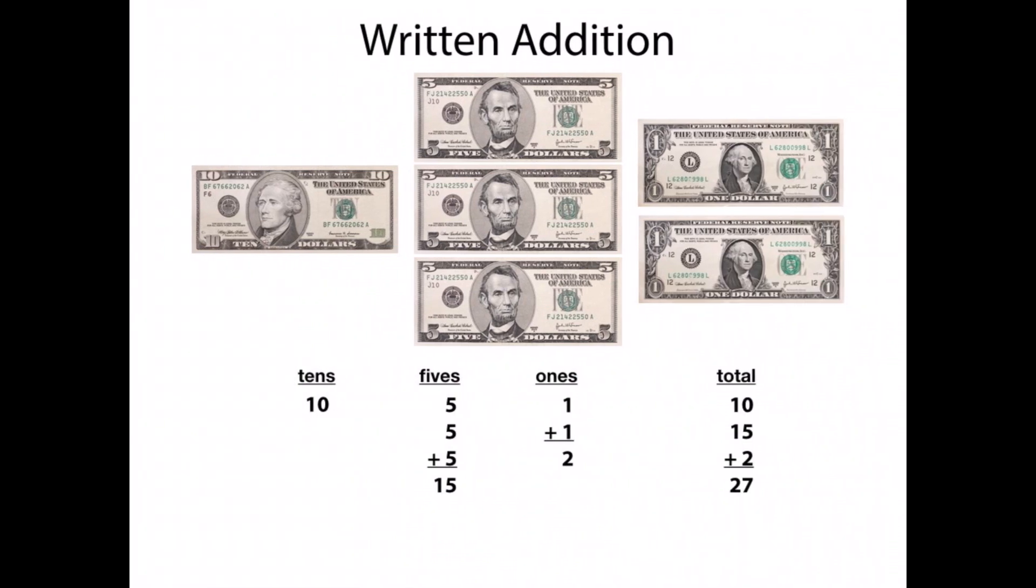So you can do a written addition by the different values. For the tens, there's one $10 bill, which is $10. There are three $5 bills, which is $15. There are two $1 bills, which is $2. Adding up all those partial sums, 10 plus 15 plus 2 is $27.